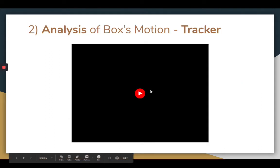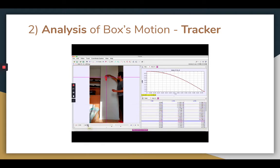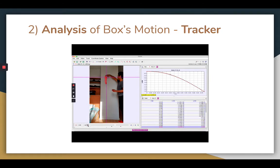I used this video of the box along with Tracker to plot its position as a function of time. I chose my axes such that up is positive y and down is negative y, so I obtained a downward sloping graph of position versus time as seen here.